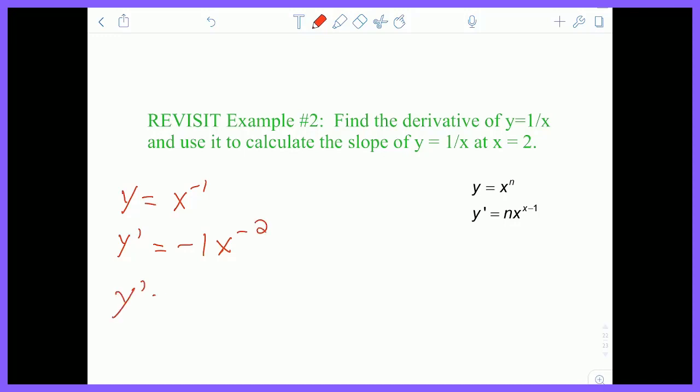So its derivative would be the power comes down and we reduce by 1. So if we rewrote this, the derivative is negative 1 over x to the second power, which we found in the video.